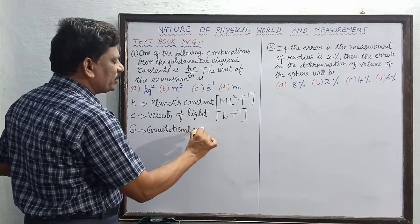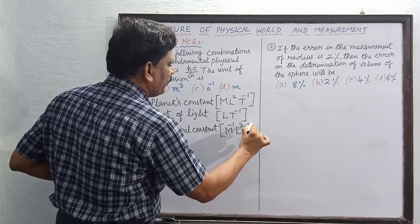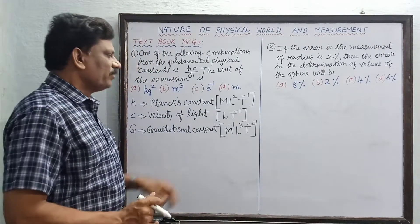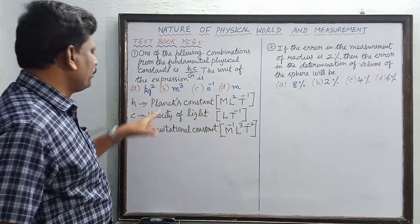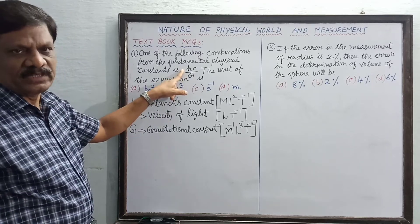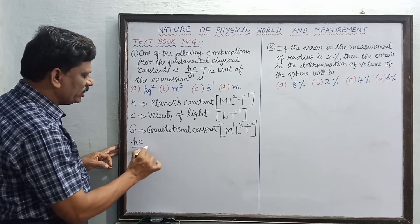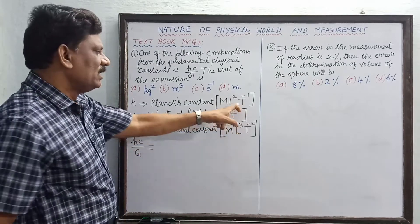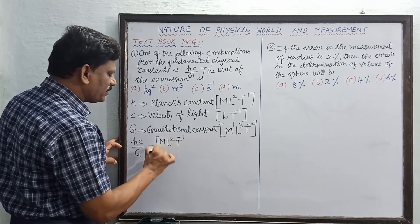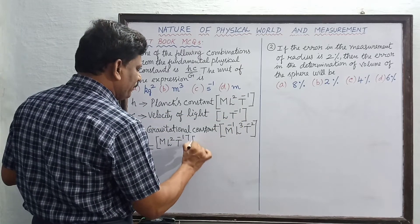The dimension of G is M⁻¹ L³ T⁻². You will have to keep all these dimensions in memory. We are going to use the dimensions of Planck's constant h, velocity of light c, and gravitational constant G in the expression hc/G. So, in place of h, I substitute M L² T⁻¹.